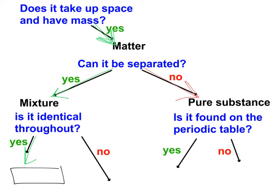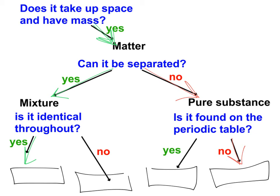Can it be separated? No — it's a pure substance. Is it found on the periodic table? No, it's not. So what do you think these words are? Make yours look like mine and try to figure out what those four words are.